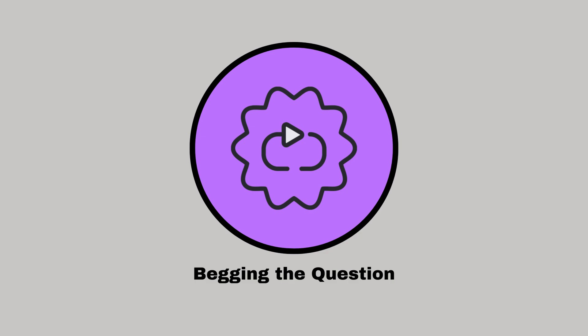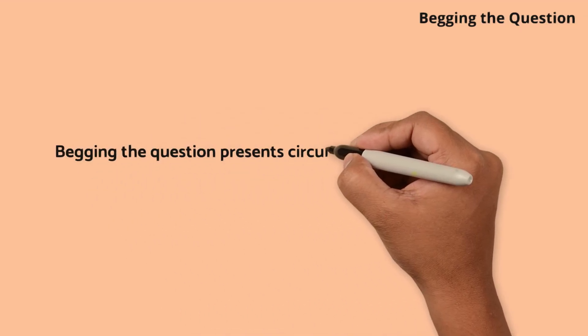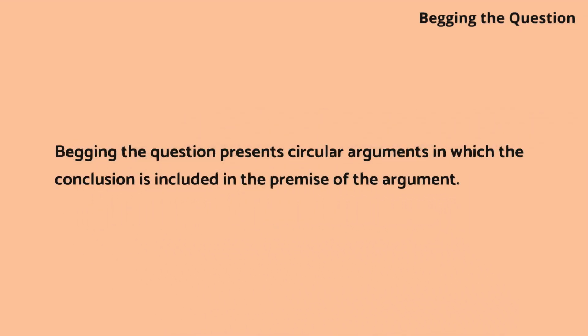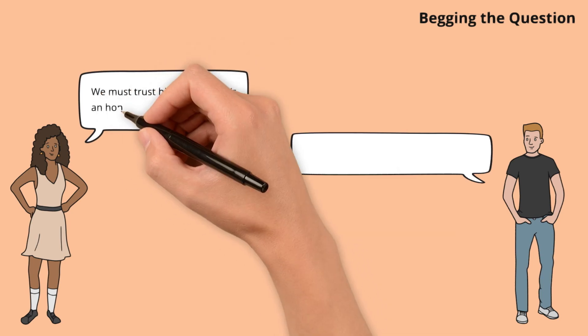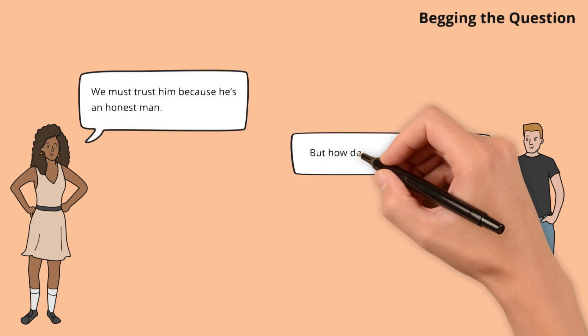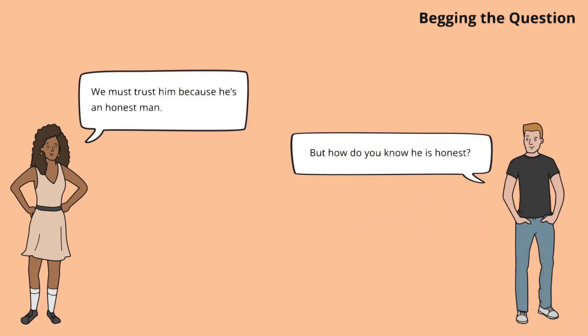Begging the question. Begging the question presents circular arguments in which the conclusion is included in the premise of the argument. Ava assumes the conclusion that someone is honest within the premise without proving it. Noah calls out this circular reasoning, pushing for actual evidence.